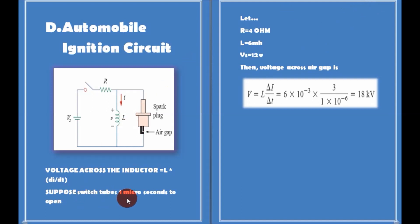Suppose the switch takes 1 microsecond to open and we let R = 4 ohms, L = 6 millihenries, and Vs = 12 volts. Then putting these numbers into the formula V = L × di/dt, you will get approximately 18 kilovolts, which is very large and enough to generate a spark across the air gap.